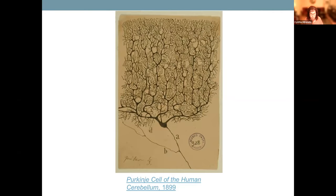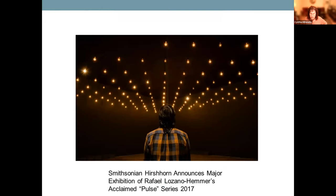Santiago Ramón y Cajal drew Purkinje's cell of the human cerebellum in 1899. He's known as the father of modern neuroscience. The artist Cajal was the first to suggest that individual cells structure the brain, and in 1890 created detailed drawings to illustrate his microscope-aided findings. Now to more contemporary artists: at the Smithsonian Hirshhorn Museum and Sculpture Garden, Mexican-Canadian artist Lozano Hemmer exhibited in 2018 and 2019. His interactive artwork, PULSE, filled the museum's entire second-floor galleries with evocative, immersive environments that use heart rate sensors to create kinetic and audiovisual experiences from the visitor's own biometric data.